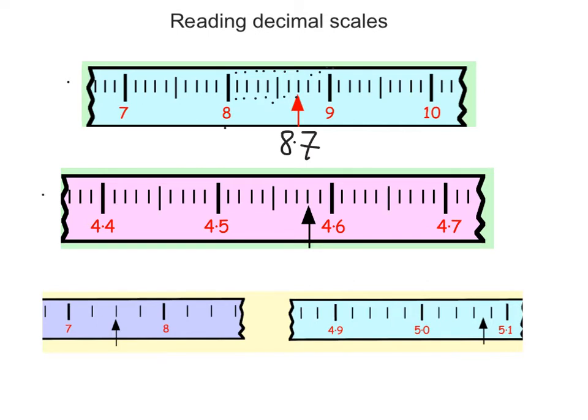Now here's the second question here. Now the numbers are between 4.5 and 4.6. So these divisions have got something to do with hundredths. But we need to count how many divisions there are first to see what they mean. So let's start at one bold line and go to the next one.